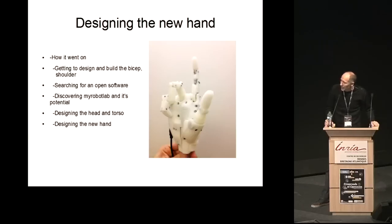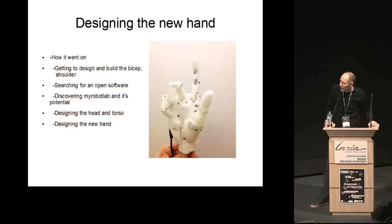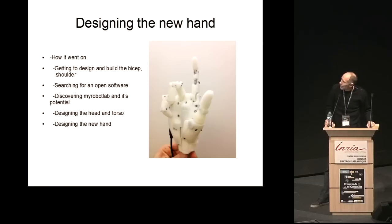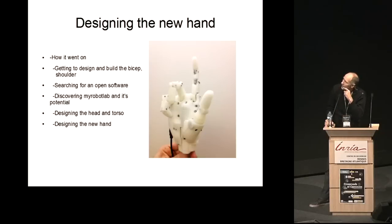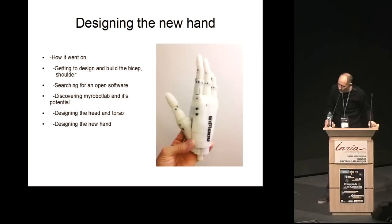Meanwhile, many people asked about using the hand as a prosthetic. That's how I met Nicolas Huchet — they wanted to control the hand with muscle sensors. From that point, I redesigned the hand to be totally usable as a prosthetic. The new hand has five motors inside, an Arduino board, three motor drivers, and an advanced muscle sensor — all in one unit. It took me a year to do this.